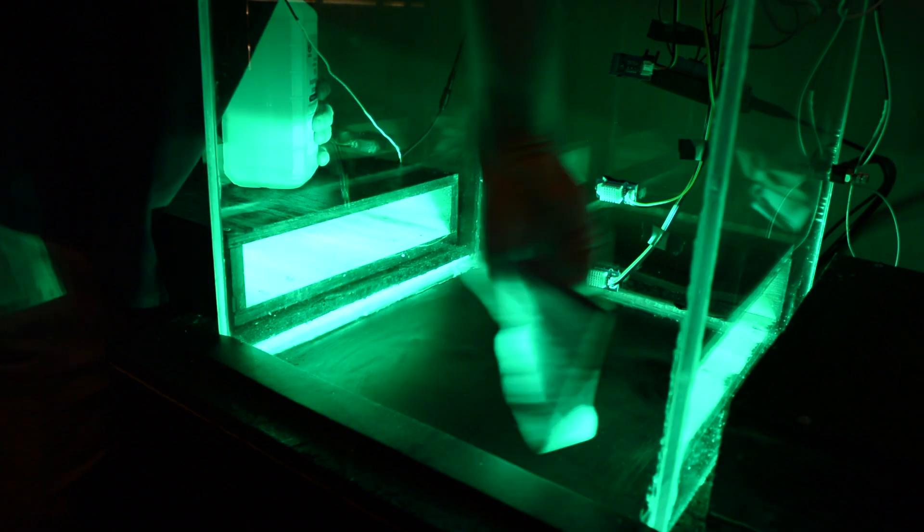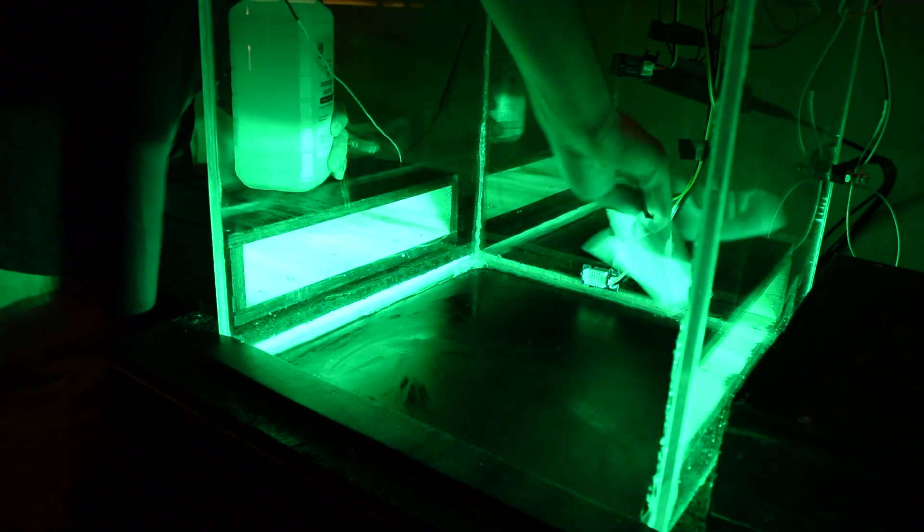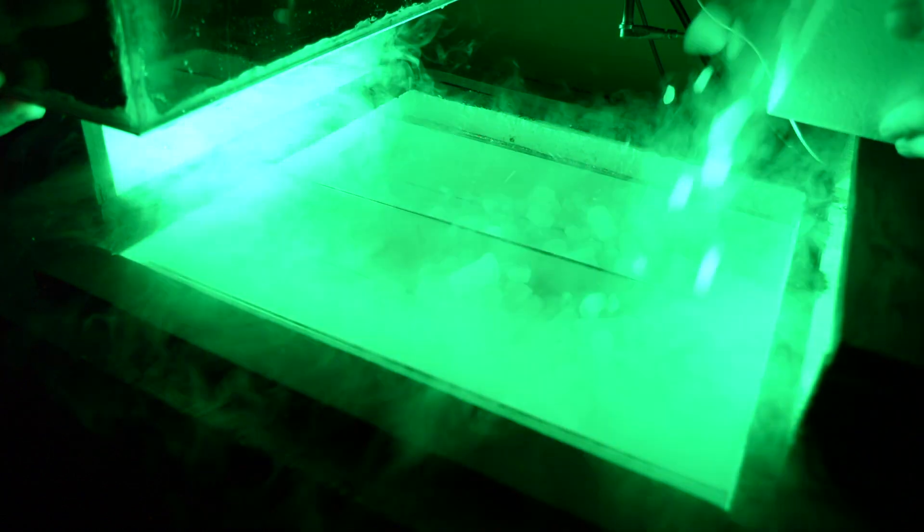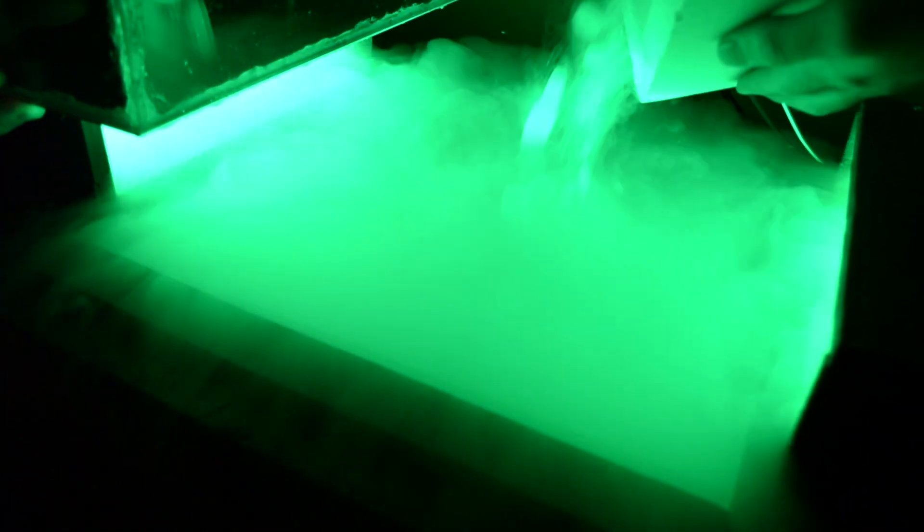The procedures to run the cloud chamber are fairly simple and start with cleaning the inside of the chamber using isopropyl alcohol to remove any dust or foreign material that may have accumulated. The next step is to fill the base of the cloud chamber with a fairly large amount of dry ice to ensure that the chamber cools sufficiently before placing the acrylic chamber on top.